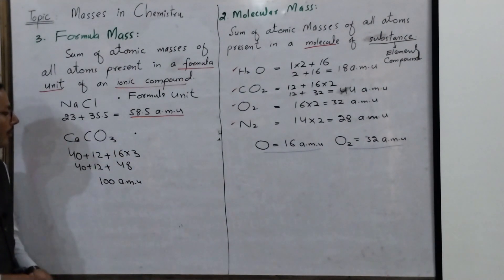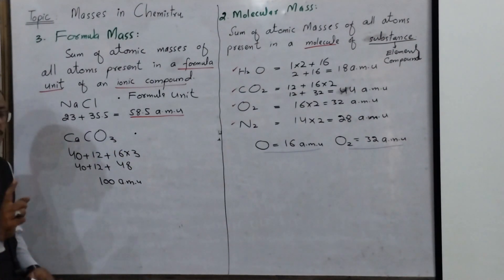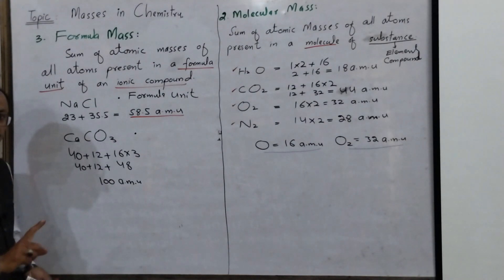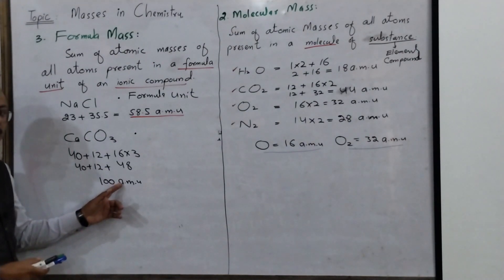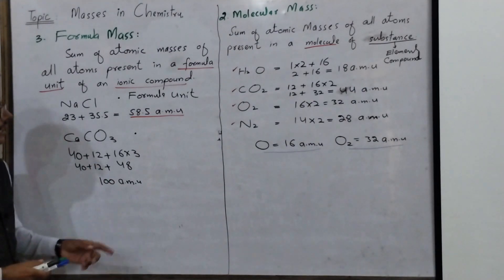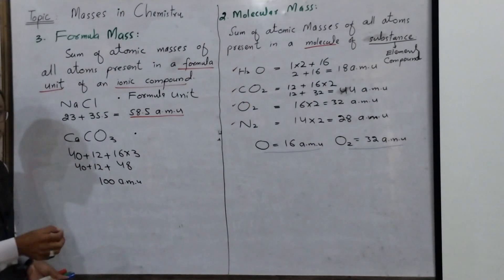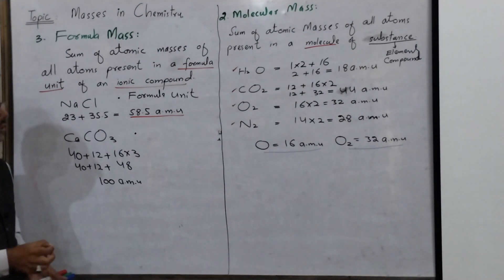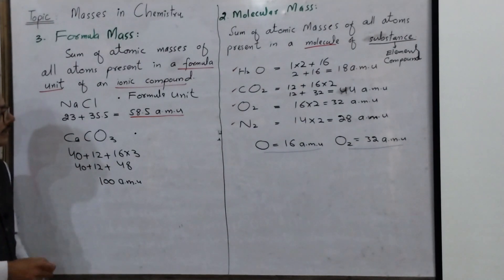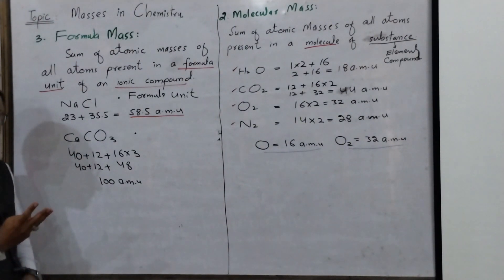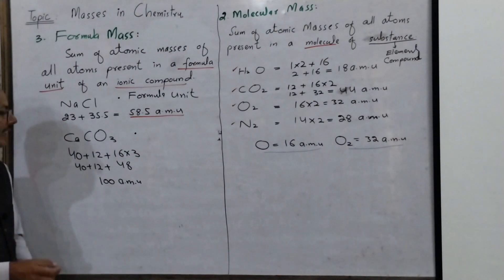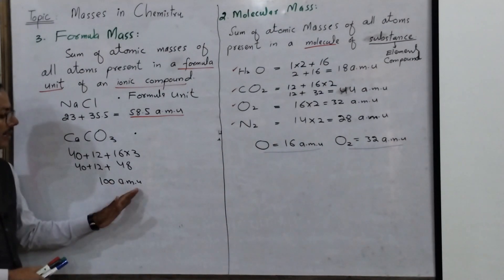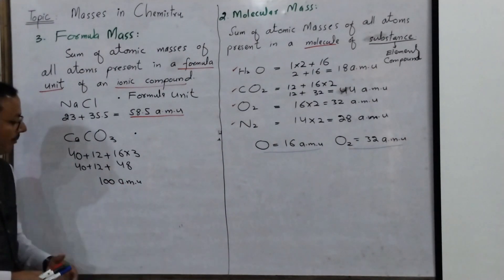So 100 AMU — which mass of calcium carbonate is this? Not atomic mass, not molecular mass — it is formula mass. This is its formula mass. So students, in chemistry for substances — whether elements or compounds, and whether covalent or ionic compounds — their masses are known by three names: atomic mass, molecular mass, and formula mass. The interesting thing is that the unit of all three is the same: AMU.